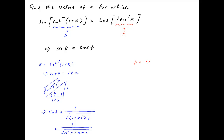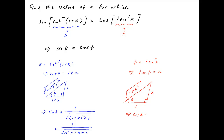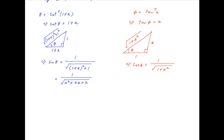Now phi is equal to tan inverse x, therefore tan phi is equal to x. Consider a right angle triangle where the angle between the base and the hypotenuse is phi. Since tan phi is equal to x, the perpendicular is x and the base is 1. Using Pythagoras theorem, the hypotenuse is equal to square root of 1 plus x squared. Therefore, cos phi, which is equal to the base upon the hypotenuse, is equal to 1 upon square root of 1 plus x squared.